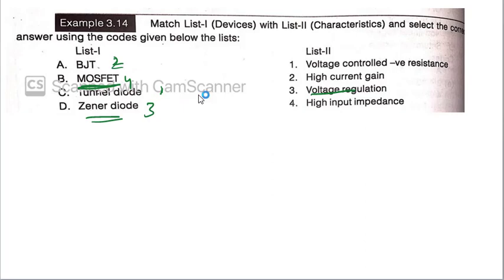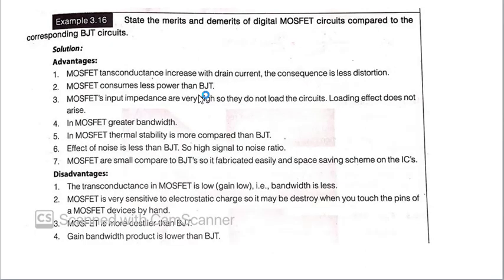Now, I am explaining you the advantages and disadvantages of the MOSFET circuit. State the merits and demerits of digital MOSFET circuit compared to the corresponding BJT circuit. Advantage is: MOSFET transconductance increases with the drain current. The consequences are less distorted. It will have less distortion. Second, MOSFET consumes less power than BJT. We all know that MOSFET input impedance are very high, generally in megaohms. So, they do not load the circuit. Loading effect does not arise.